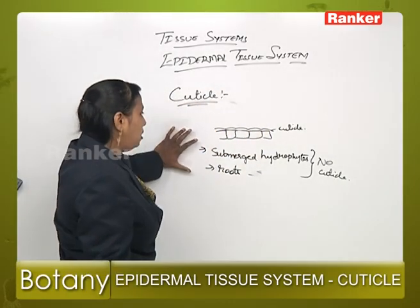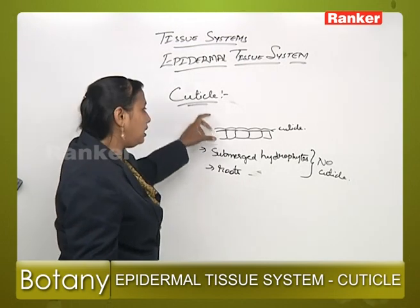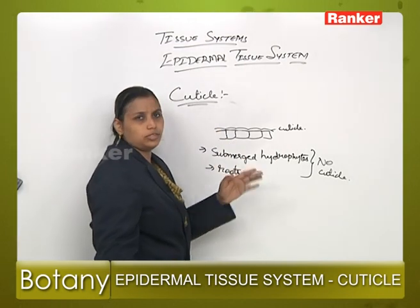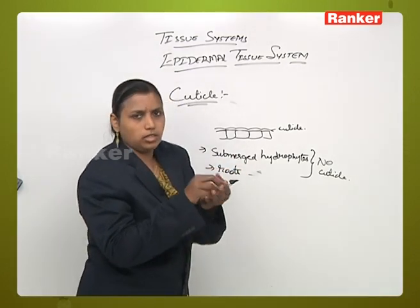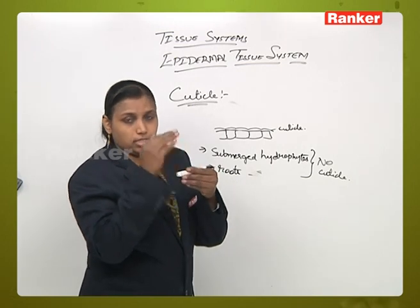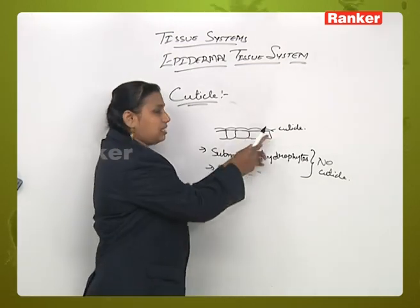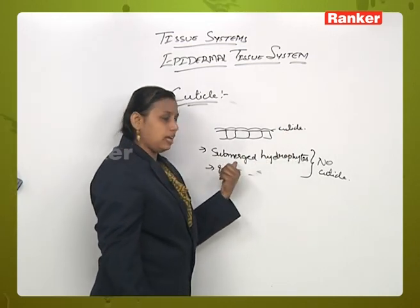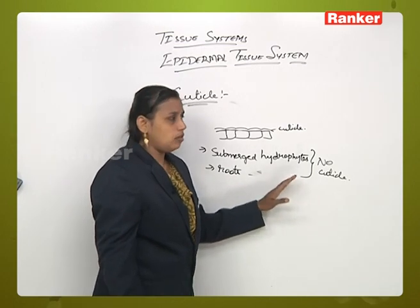Almost all plants have cuticle above the epidermis. It acts as a protective cover to the epidermis — like a soap box covering the soap. So if the soap is the epidermis, the soap box is the cuticle. It is almost not seen in roots and submerged hydrophytes.